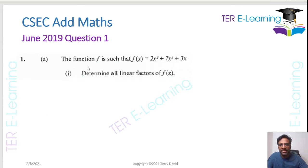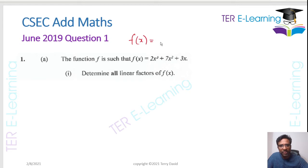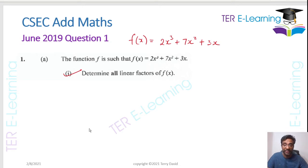The first question I'm looking at is Question 1 from June 2019. They've given us a function f(x), which is equal to 2x cubed plus 7x squared plus 3x. The question asks us to determine all the linear factors of f(x). Because there is no constant in this function, it is very easy to factorize.